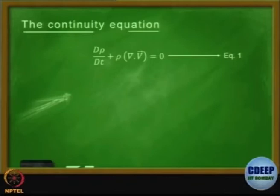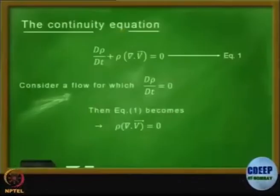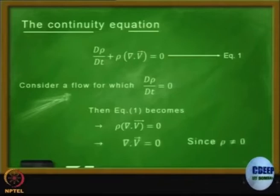So today we assume that this is true. Then let us look at the flow for which the density change over time — the total derivative — is zero. If that is the case, then this becomes rho times del V equal to zero. But rho is a property of fluid; it cannot be zero. Zero rho means no fluid. So therefore the condition becomes del dot V equal to zero.